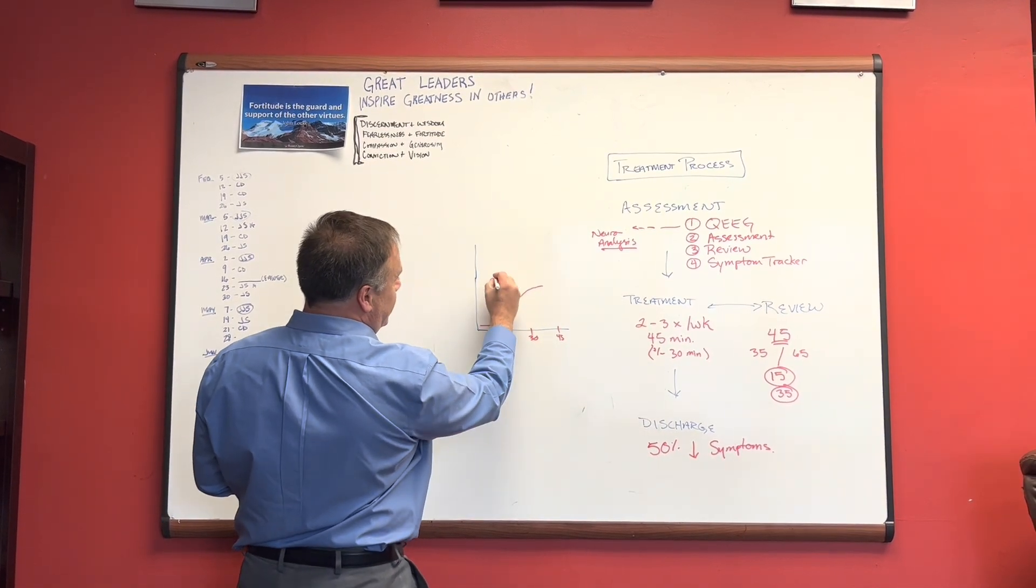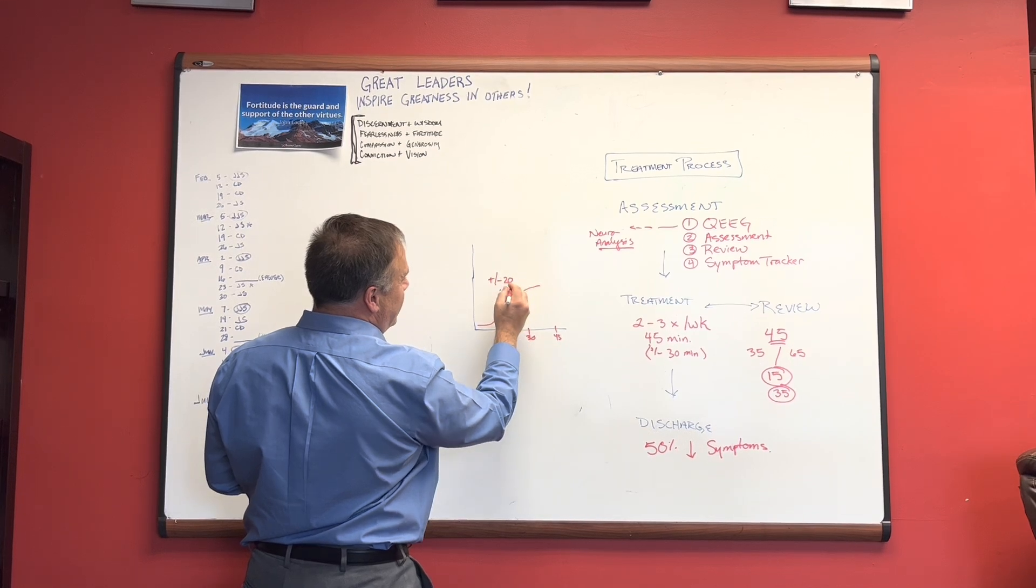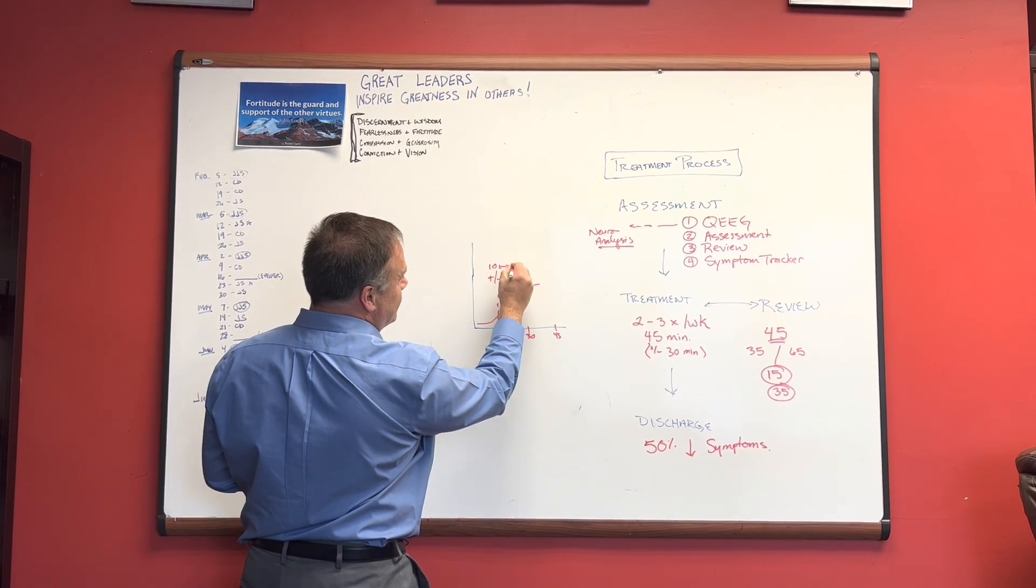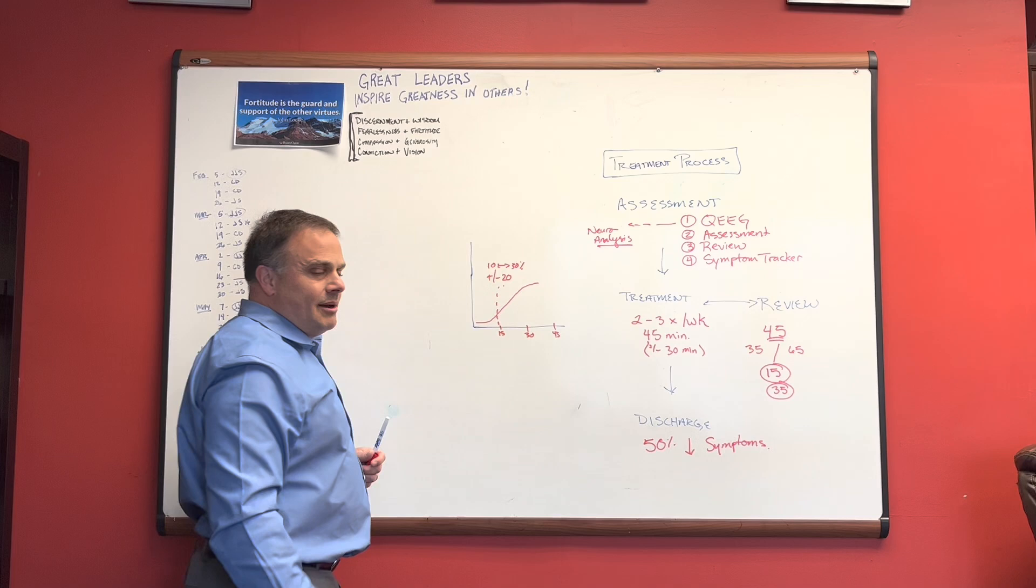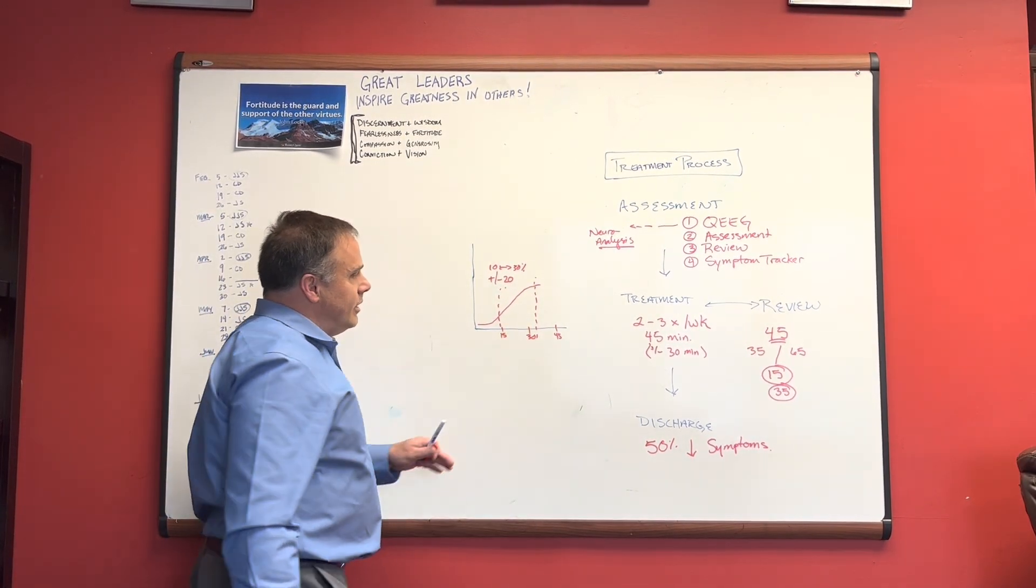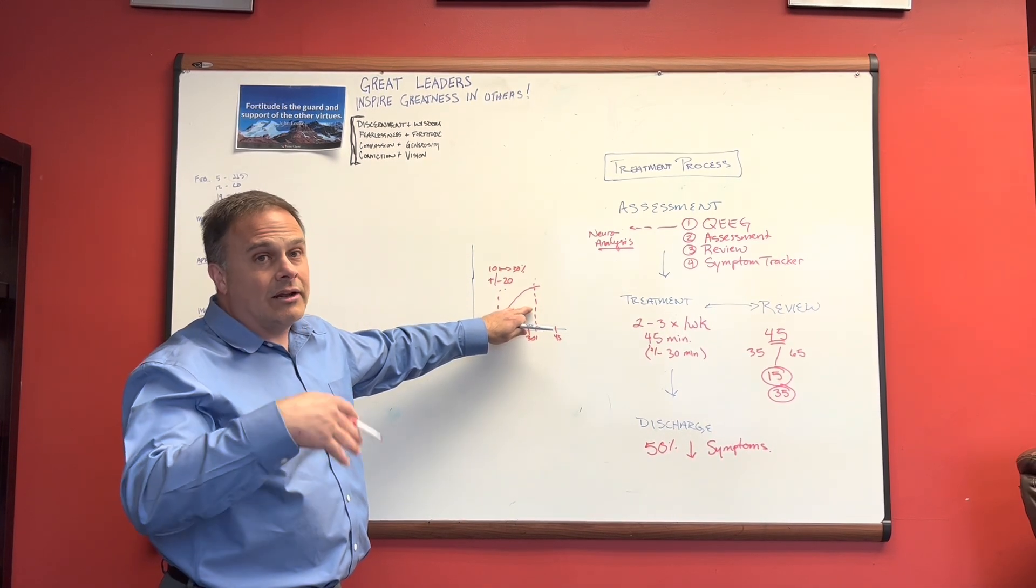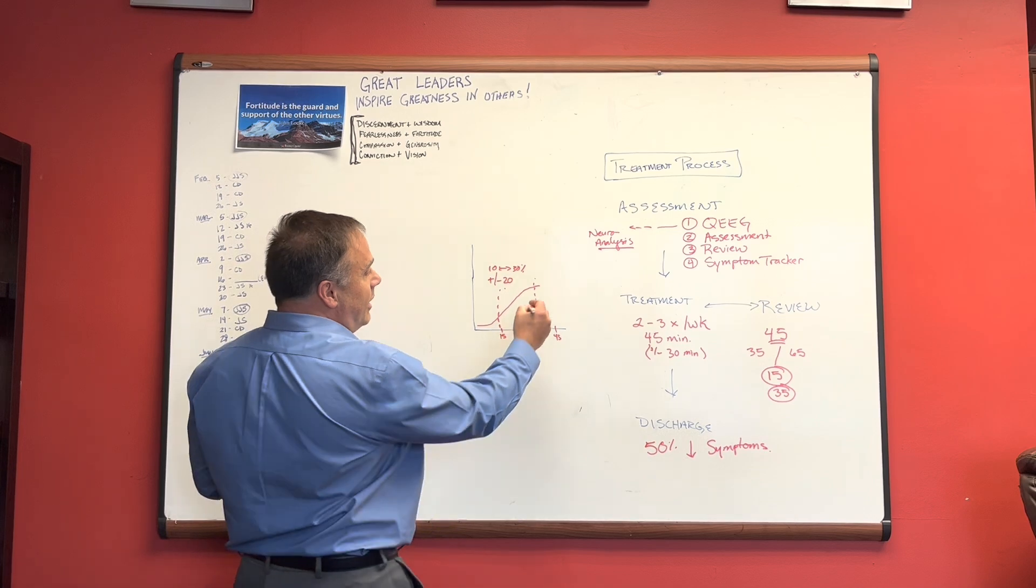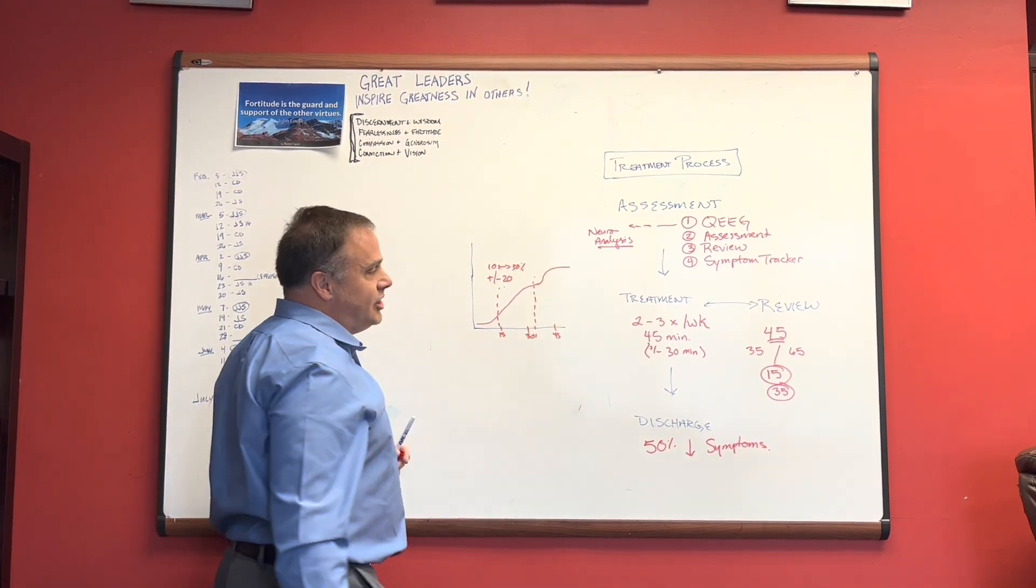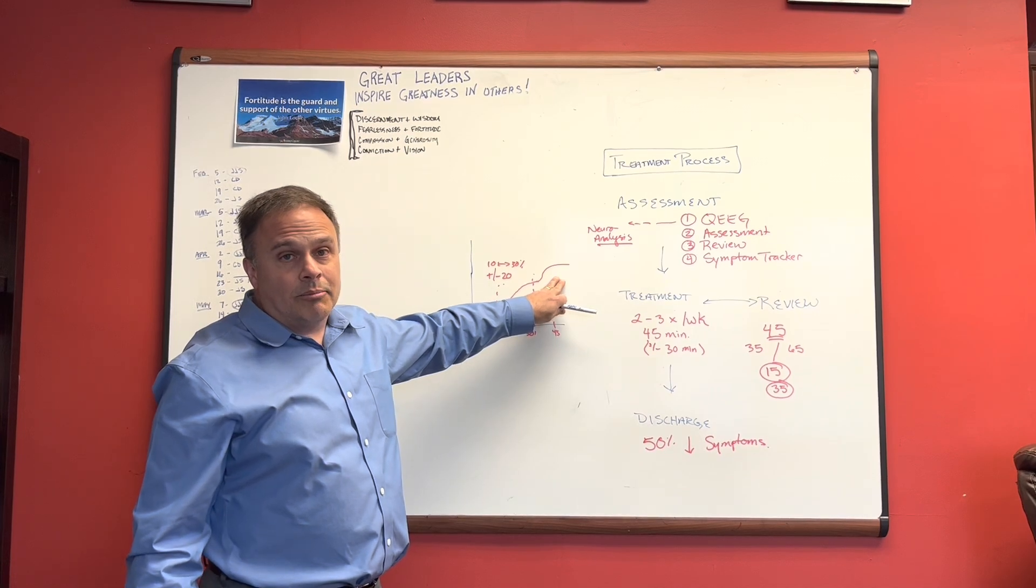Typically at the 15th appointment, I'm kind of plus or minus 20%, oftentimes between 10 and 30% reduction at that point in time. And by the time I'm getting up to 35 is when I'm getting pretty close to the 50. And typically after that 35, this is normal. This is kind of like your baseline expectation. After that, I can kind of shift my angle of approach and get some other significant improvements.